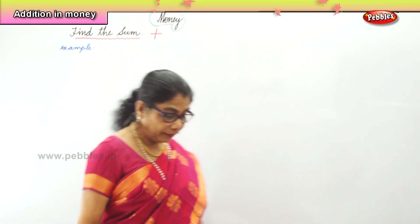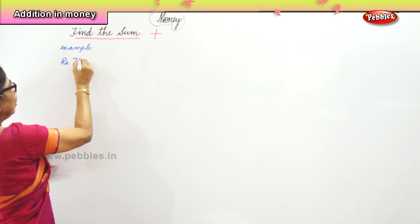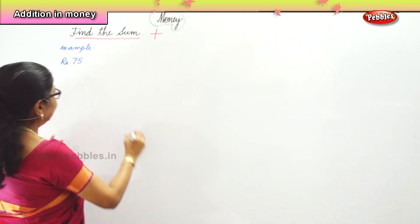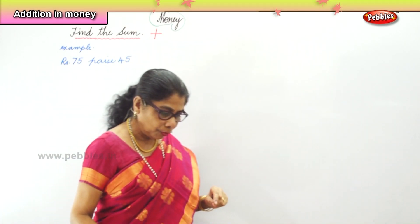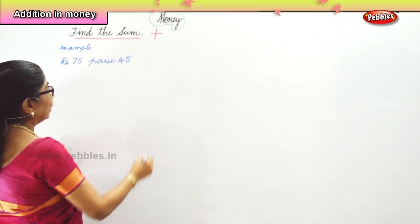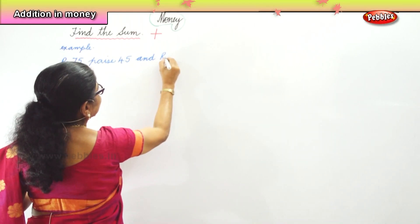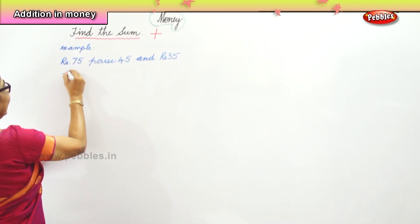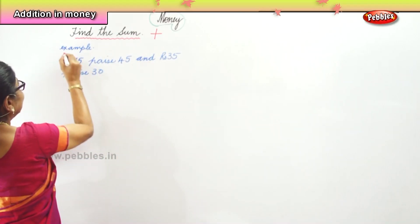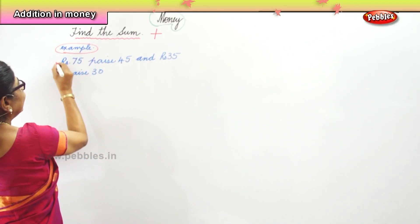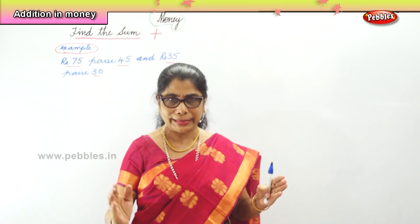The first sum is rupees 75 and paise 45, and we are going to add rupees 35 and paise 30. So we have 75 rupees 45 paise plus 35 rupees 30 paise, and we need to add both of these together.